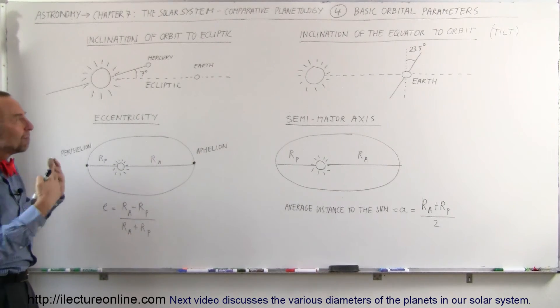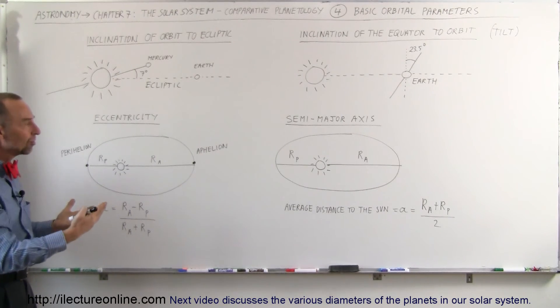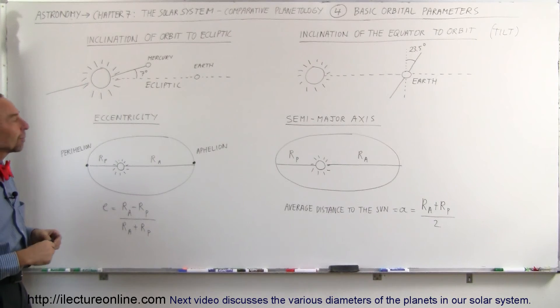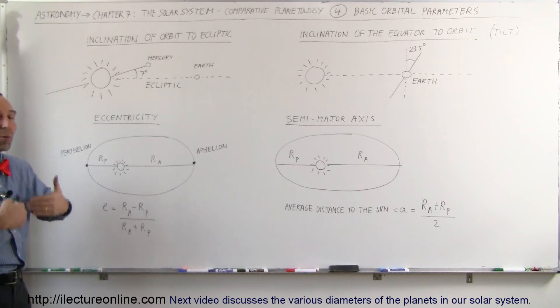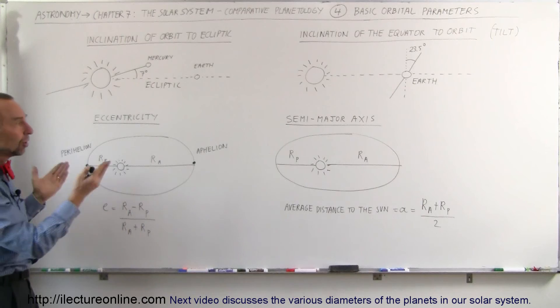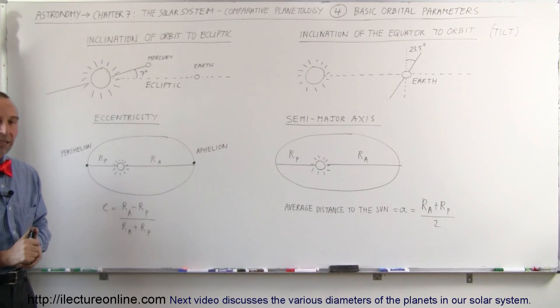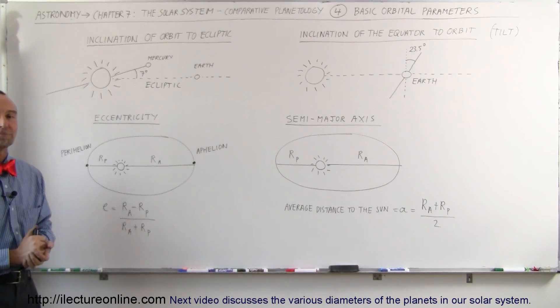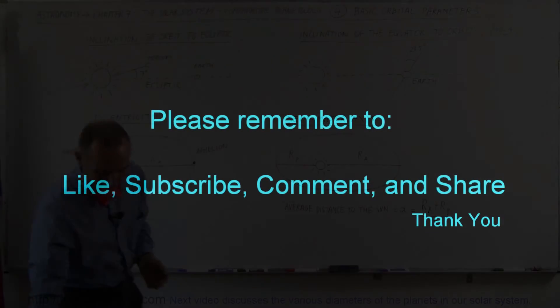So those are some of the more major ways of looking at the orbits and the tilt and orientation of the planets, and so hopefully that gives you a better understanding so when we start comparing the planets to one another, you have an idea of what we're talking about in that respect.